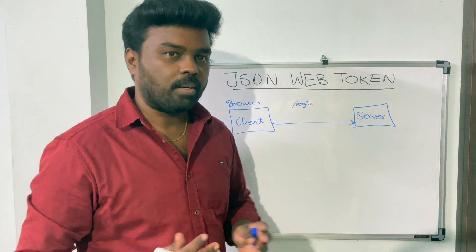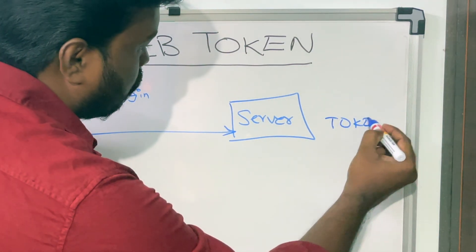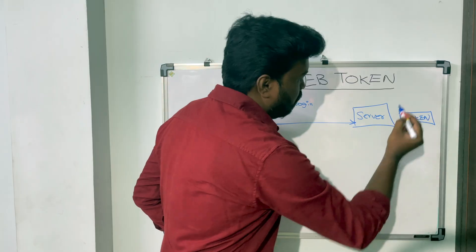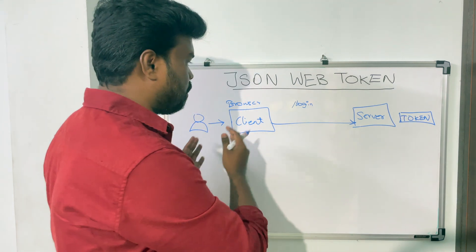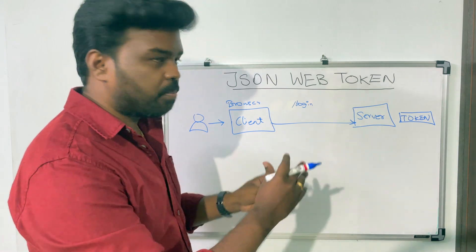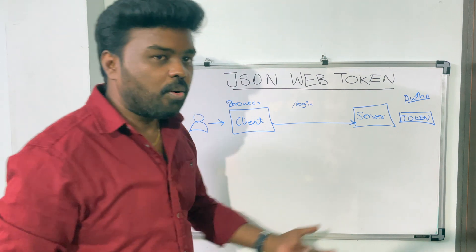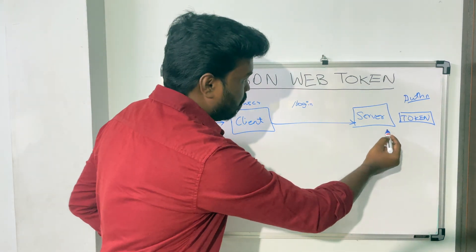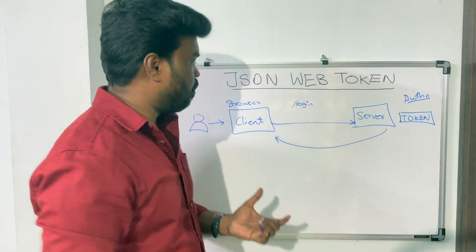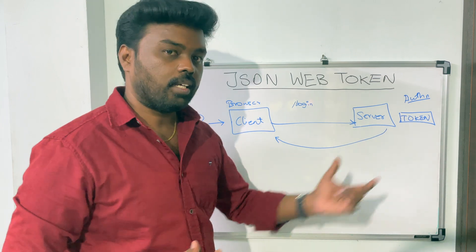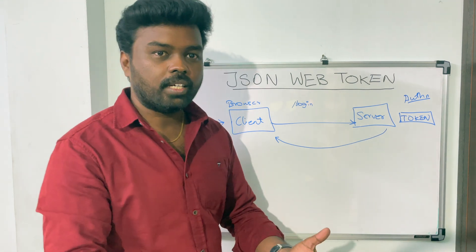Once the authentication process is complete and the validation is done, the server will create a token. This token contains all the information about the user and also contains all the privileges that the user has in the application — this process is what we call authentication. Once the token is generated, the server gives the token back to the client. Now the client is authenticated, and whenever the client wants to access any other resource in the server, like fetching or adding data, it needs to pass the token along with the request through the headers.